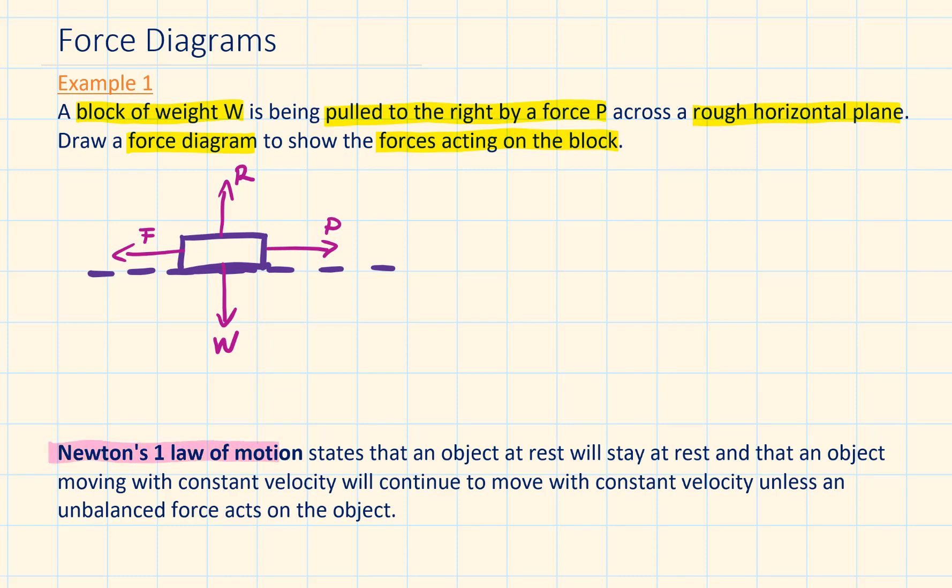Newton's first law of motion states that an object at rest will stay at rest, and an object moving with constant velocity will continue to move with constant velocity, unless an unbalanced force acts on the object. The forces could act in any direction. However, in this video we will only show forces that are horizontal or vertical.